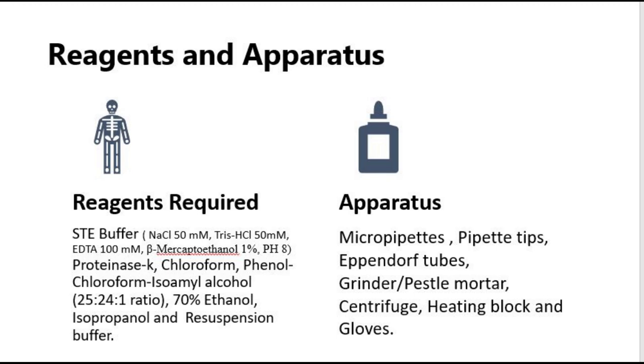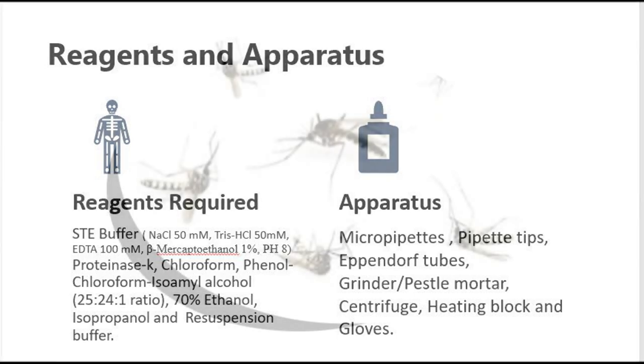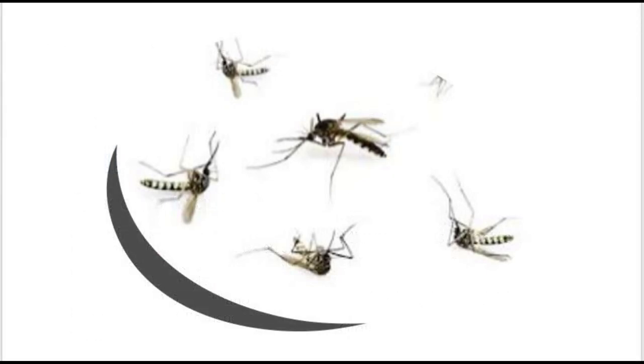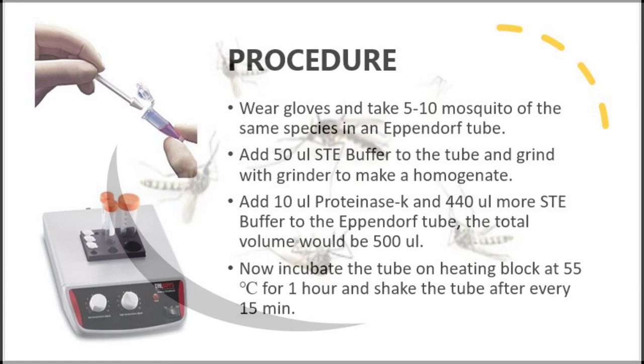Operators include micropipettes, pipette tips, eppendorf tubes, pestle mortar, centrifuge, heating block, and gloves. First of all, take five to ten mosquitoes in an eppendorf tube.